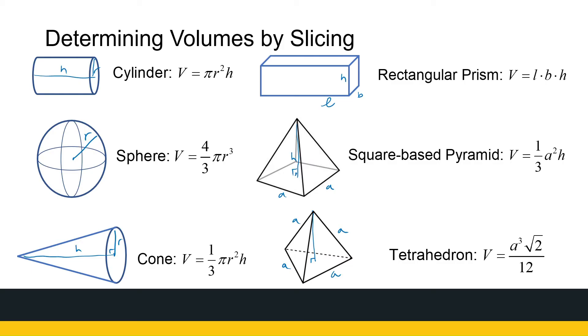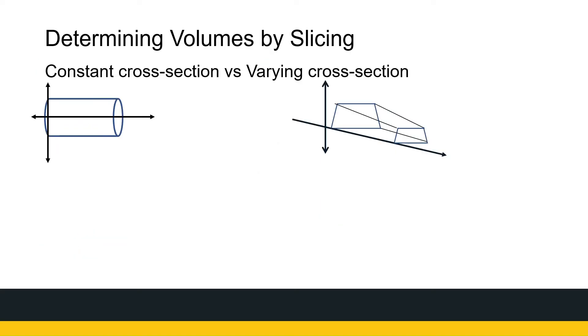So we're going to use the same process we've had now to find volumes of shapes. So let's get started by looking at the two types of shapes we get. We get a shape that has a constant cross-section. Meaning, if I chop it into little pieces, and that's what we're going to do, we're going to slice it. Every slice has the same. The face of every slice has the same area. In this case, it's a circle with radius r, whatever it is. So the area of that slice is going to be πr².